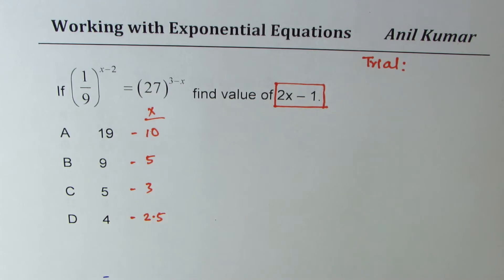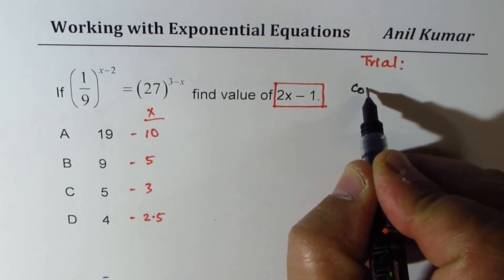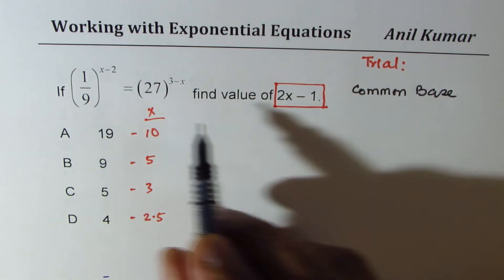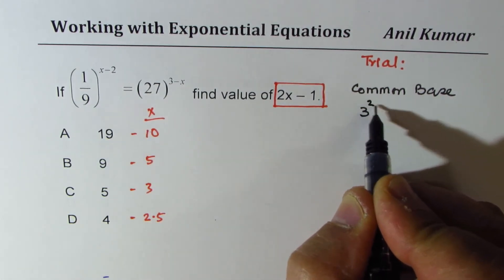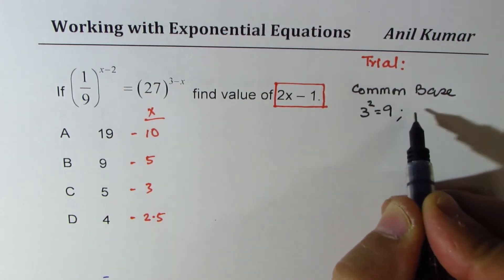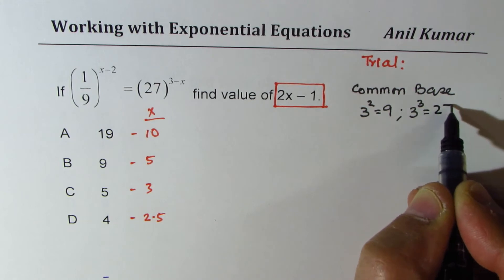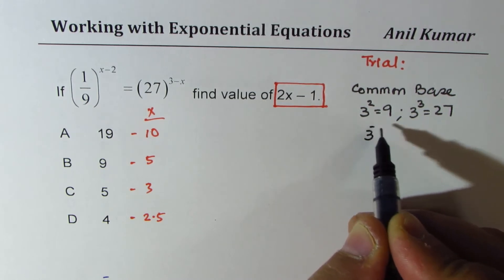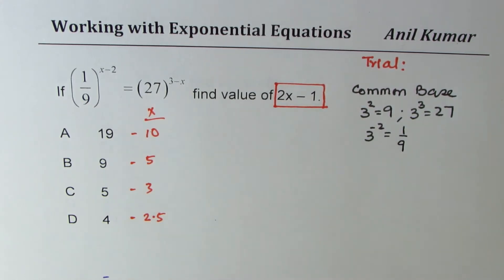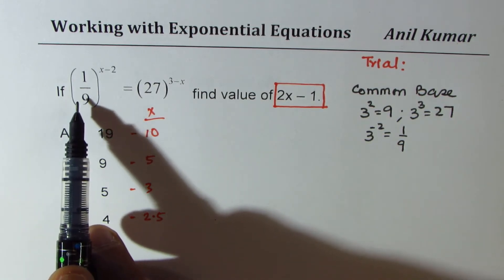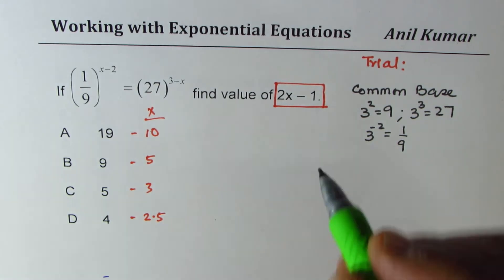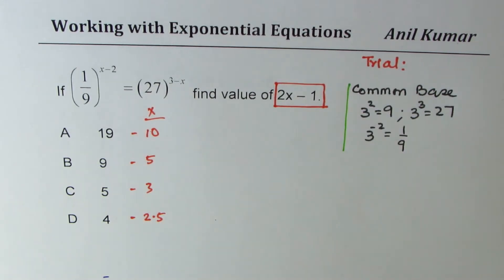However, don't waste time in all this, but follow method. So what is the method here? We have to have common base. So 3 seems to be a good combination. We know 3 squared is 9 and we also know that 3 cubed is 27. So that gives you the common base. And if it is 1 over 9, definitely it is 3 to the power of minus 2, which is 1 over 9. So with that, you can make a substitution and solve. So you have to have a common base to solve such equations.